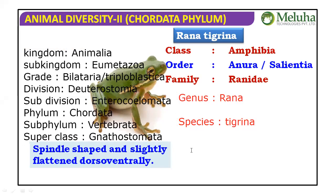The complete classification of the frog: Kingdom Animalia, Sub Kingdom Eumetazoa, Grade Bilateria, Division Deuterostomia, Subdivision Enterocoelomata, Phylum Chordata, Subphylum Vertebrata, Superclass Gnathostomata, Class Amphibia, Order Anura or Salentia, Family Ranidae, Genus Rana, Species tigrina. This is the complete picture of the frog.